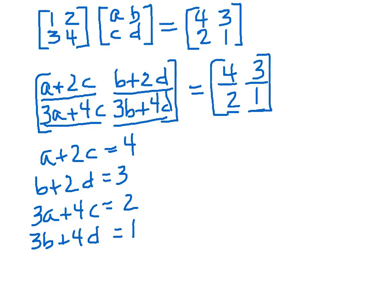And supposedly we know how to solve systems of equations. I've got these two equations that involve the unknowns A and C. Two equations and two unknowns A and C. And I've got these other two equations that involve B and D. So hypothetically I could solve this pair for A and C, this pair for B and D, and that would give me the values for the unknowns.